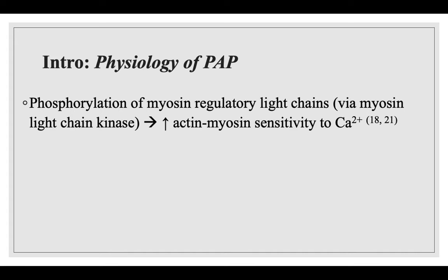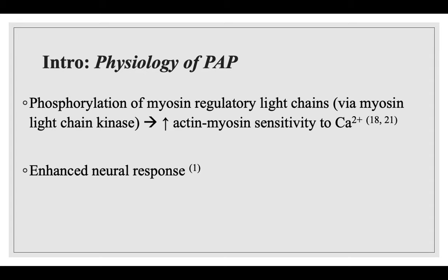So all in all, we have enhanced muscle force and rate of force development — in other words, our power production is increased. The second mechanism suggests that PAP is caused by an enhanced neural response, either from an increase in alpha motor neuron excitability or a decrease in presynaptic inhibition of the afferent neuron, again enhancing muscle force and rate of force development.